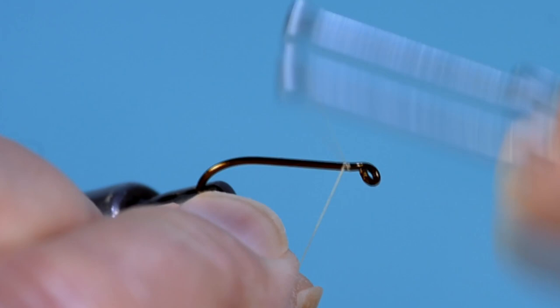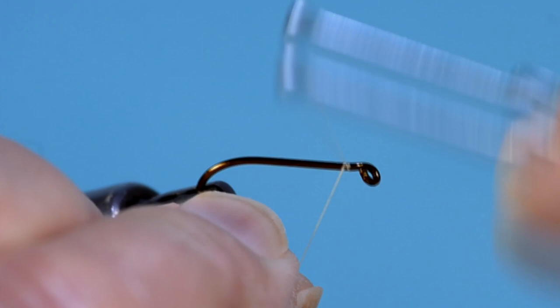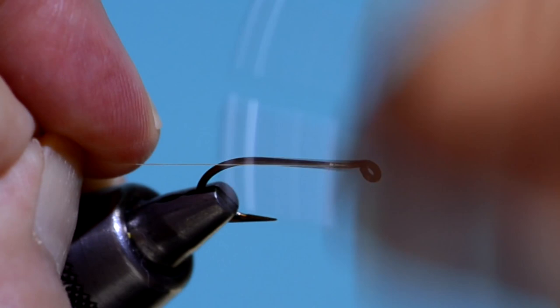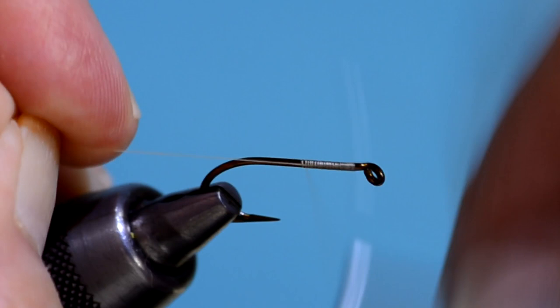As with all the other flies in this series, start the thread just behind the eye and take it all the way back to the bend. I've sped up some of the sequences in this video to cut down a little bit on the boredom.